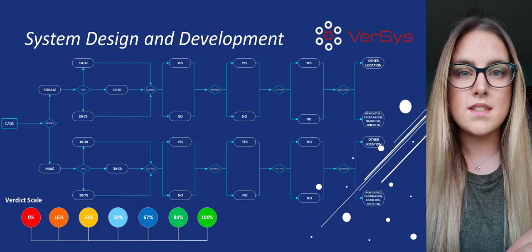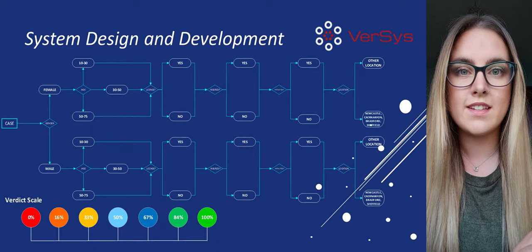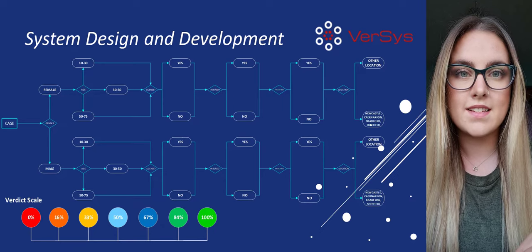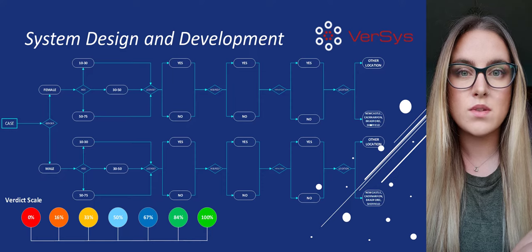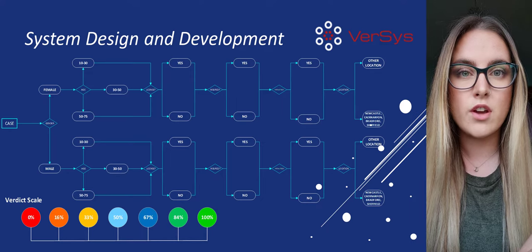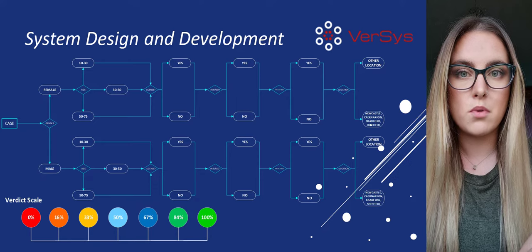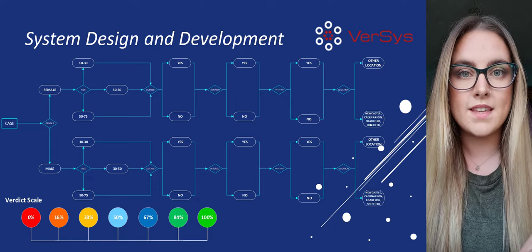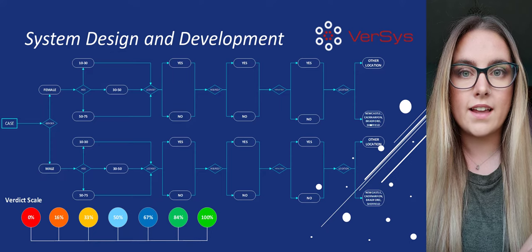Within the system design and development section, I designed an intelligent legal decision support system named Versus, and built a framework to inject the intelligence into the proposed system. Based on the data analysis, the system makes the following decisions: males are more likely to offend than females; individuals in the 10–30 age group are more common to offend than those in the 30–50 or 50–75 age group; if an offender does not hold a licence they are more likely to be guilty; if an offender is not insured, chances are higher of them being proven guilty; when there are more fatalities recorded, there is a higher probability of the individual being proven guilty; and if the offence took place in one of the top four cities — Newcastle-upon-Tyne, Kynarvon, Bradford or Sheffield — there is more chance of the offender being guilty. Each of these observations are solely based on the data collected and analysed within the case study.